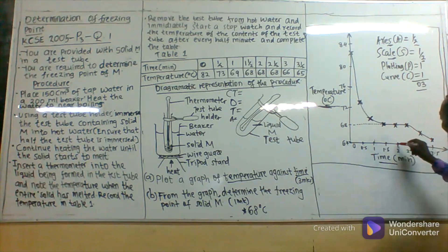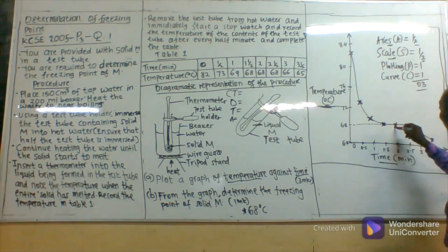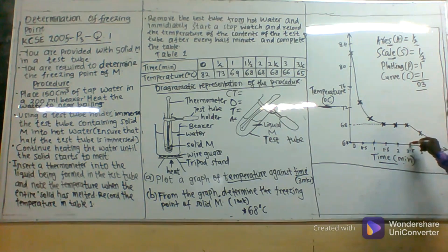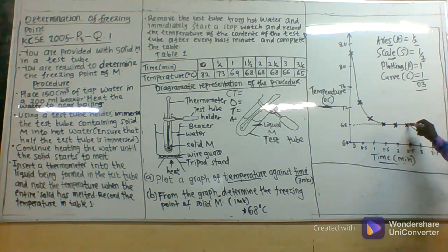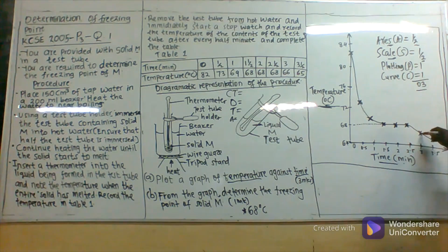When the time was at 2 minutes, the temperature remained constant at 68. When the time was at 2.5 minutes, the temperature had still remained constant at 68. When the time was 3 minutes, the temperature dropped to 66. When the time was at 3.5 minutes, the temperature had dropped again to 65.